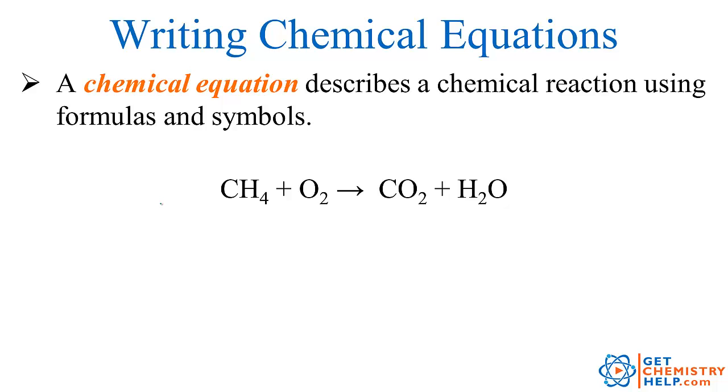Now a chemical equation is basically just a shorthand way of describing a chemical reaction using formulas and symbols. For example, here is a chemical equation and this is the shorthand version of writing methane reacts with or combines with or is added to oxygen.